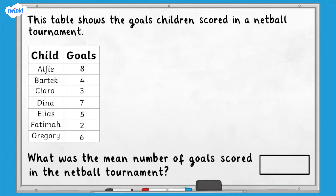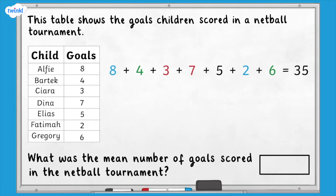Let's check your answer. The total number of goals scored was 35. Did you use number bonds to help you add up the numbers? The bonds you could have used are highlighted in different colours here. Our total is 35 and our number of items, or in this case children, is 7. So the mean is 35 divided by 7, which equals 5. The mean number of goals scored is 5.